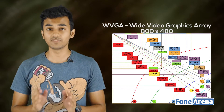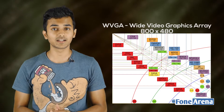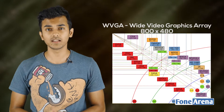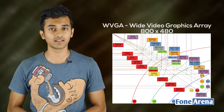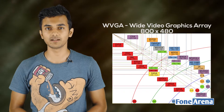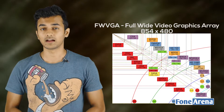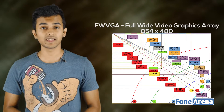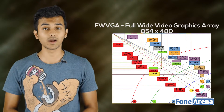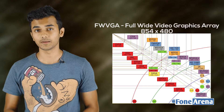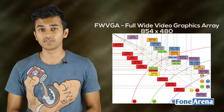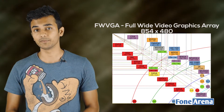WVGA has a height of 480, the same as VGA, but a wider width. The fifth type is FWVGA — Full Wide Video Graphic Array. Its resolution is 854x480 pixels.